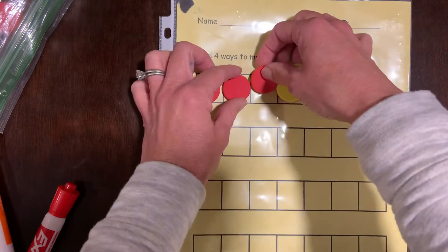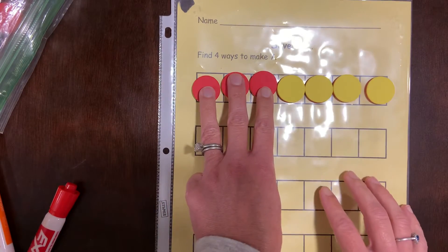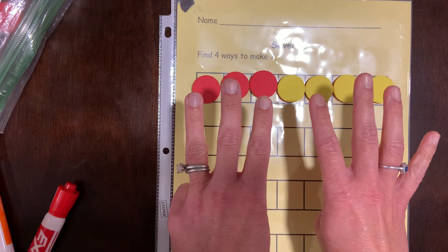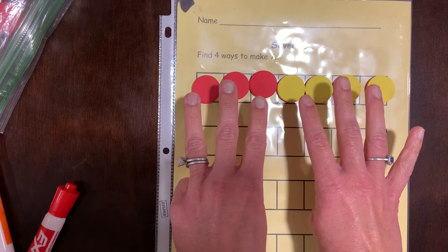And then you can see if you have three and four more, that's one way to make seven.